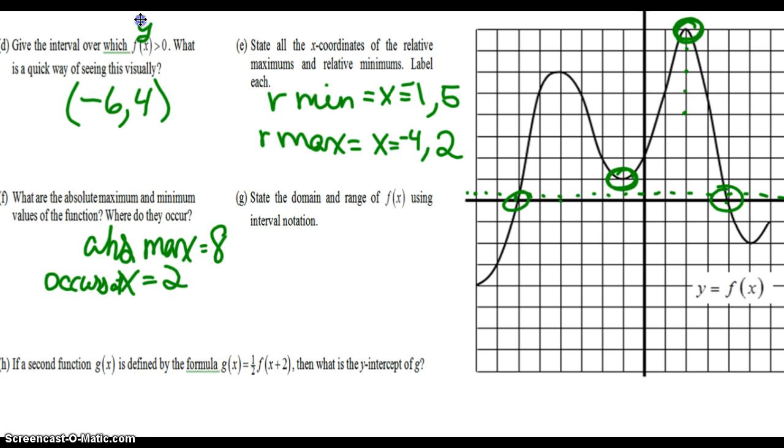So then the absolute min is this value right here. Even though it wasn't a relative, because we did not know what was going on over here in the part of the graph that does not show. So in this set of competitors, this is the smallest value. So the absolute min is negative 4, and it occurs at x equals negative 8.